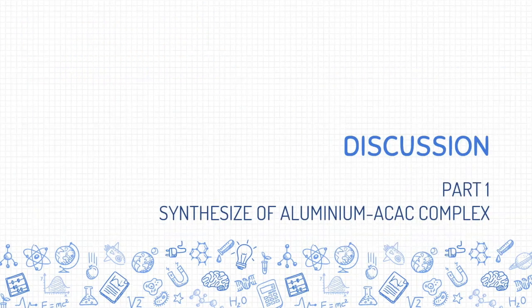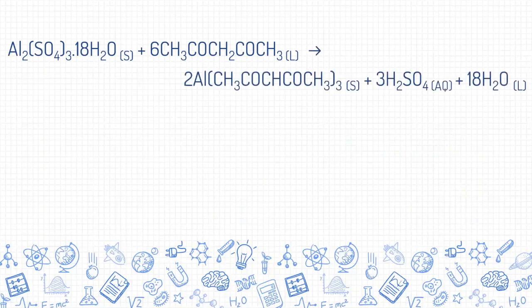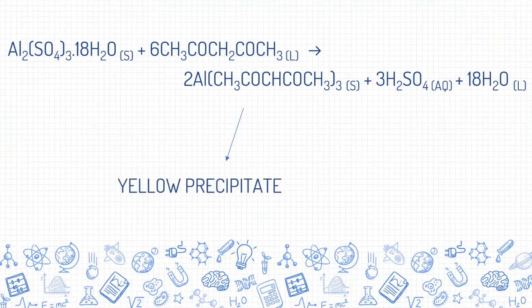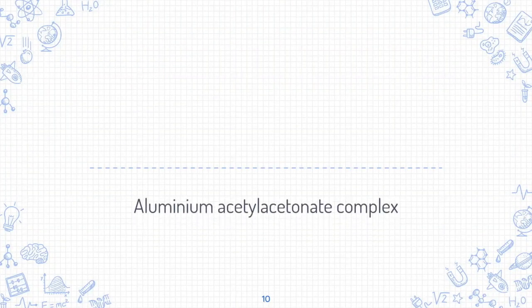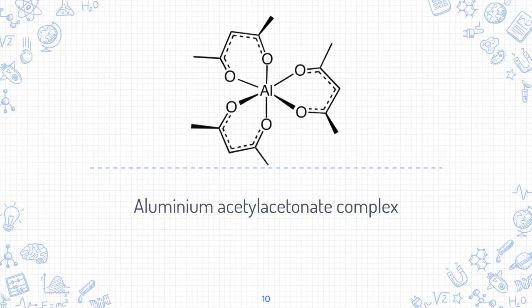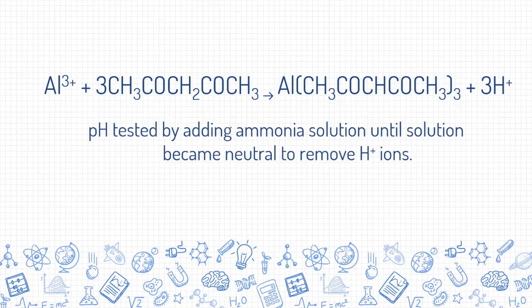The experiment was divided into two parts: synthesizing and characterizing aluminium and copper acetylacetonate complexes. For the first part, hydrated aluminium sulfate reacted with an ammoniacal solution of acetylacetone to form a yellowish precipitate of the complex. Aluminium metal ion can form 6 coordination bonds with ligands; thus, the geometrical structure for aluminium acetylacetonate complex is an octahedral shape. During synthesis, the pH was tested and ammonia solution was added until the solution became neutral or just basic, to ensure that hydrogen ions from the Al³⁺ ion and acetylacetonate were completely removed, so that the complex formed was neutral.